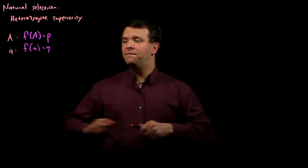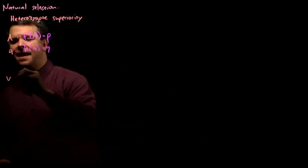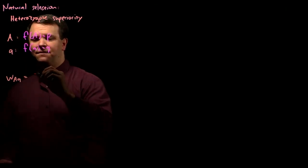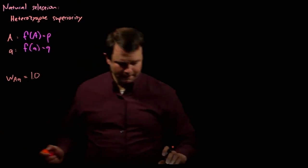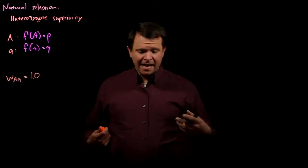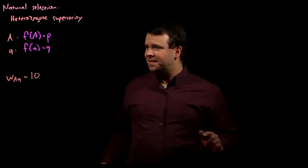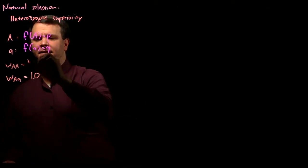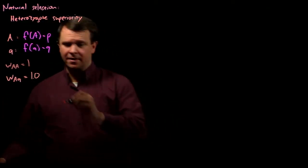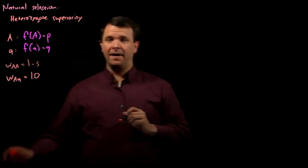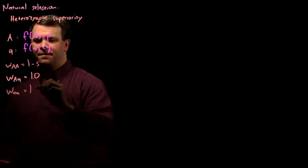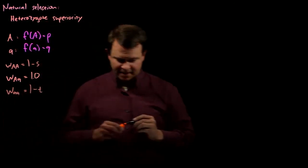As usual, we're going to say that the most fit genotype, in this case the heterozygote, has a fitness of 1. Now, let's say that the homozygous dominant genotype has a fitness of 1-s, less than 1, and the fitness of the homozygote recessive is 1-t.